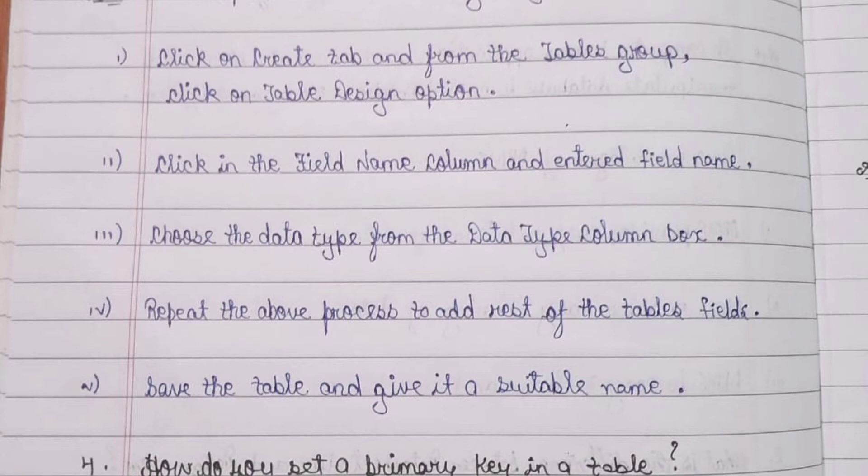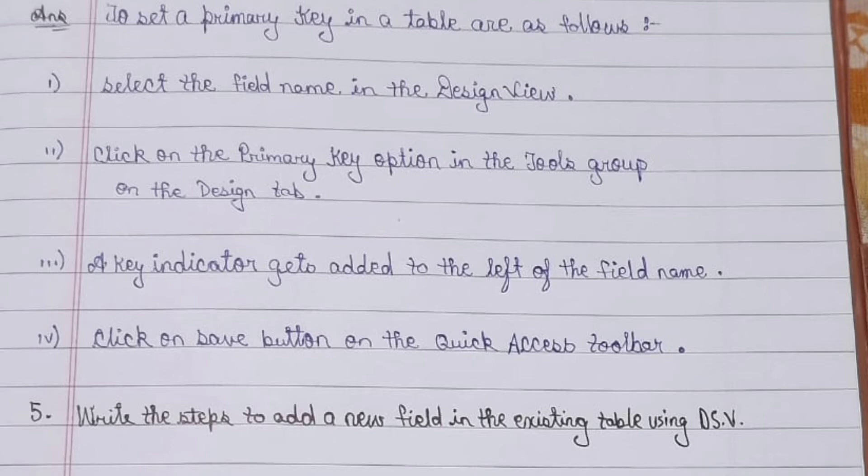Question 4: How do you set up a primary key in a table? Answer: To set a primary key in a table, follow these steps. Step 1: Select the field name in the design view.